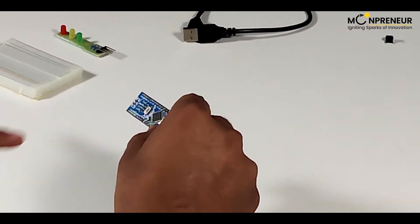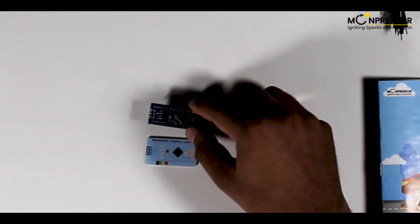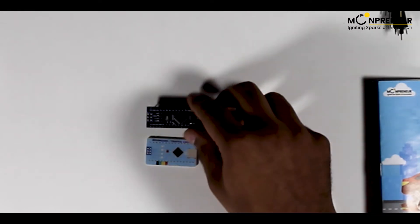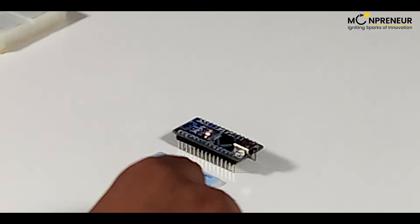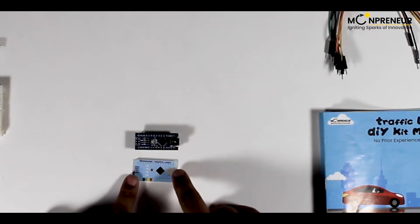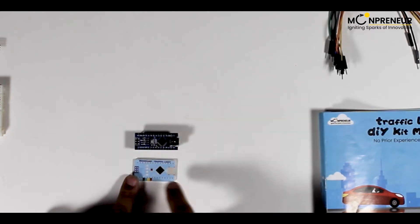We will start with the controller board, which is an Arduino Nano-compatible board and the moon card. The controller board has the software that will be responsible for controlling the traffic light. Insert the controller board in the moon card as indicated.